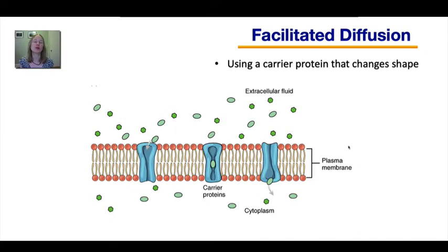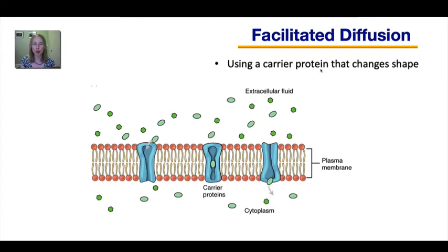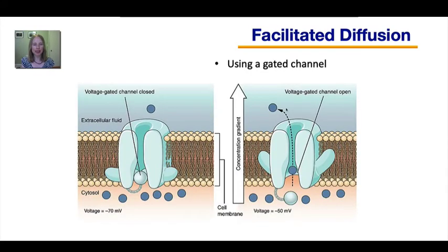The function of aquaporin is very important to your health. Before moving on to active transport, let me give a couple more details about facilitated diffusion. In some cases the transport protein is a simple channel that passively allows solutes to move through, but in other cases it is a carrier protein that changes shape as the solute moves through. In still other cases, facilitated diffusion can use what's called a gated channel that can open and close to allow solutes to move through at the right time.